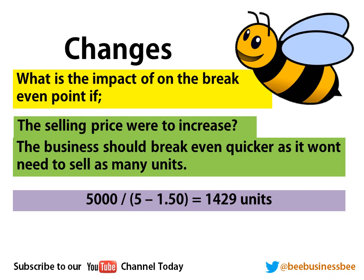So if we make some changes to our break-even point we need to know what impact it's going to have. For example, if we were to increase the selling price, what do you think would happen to our break-even point? Will we break-even quicker or longer than in our previous example? Well, we should break-even quicker if we increase our selling price, because we don't need to sell as many units. In our past example 2,500 was our break-even point. In this example I'm going to increase the selling price to £5 instead of £3.50. I've worked out that the break-even point is going to be 1,429 units. So we break-even much quicker than before — before it was 2,500, now it is 1,429 units.